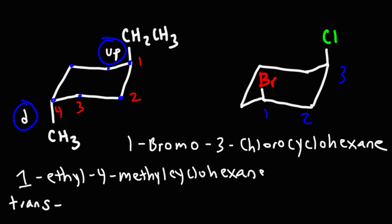Now what about the second example? So the chlorine is in the axial up position, and the same is true with the bromine. So because both of them are going up, this is going to give us a cis isomer. So this is cis-1-bromo-3-chlorocyclohexane.